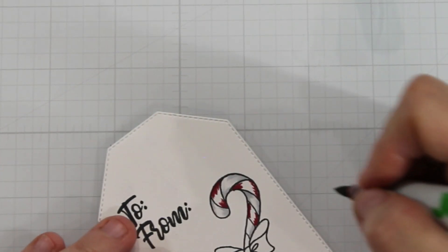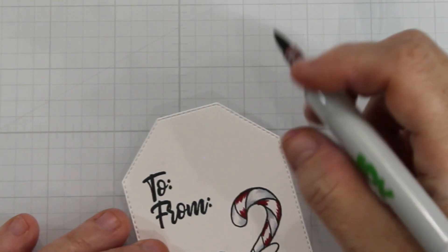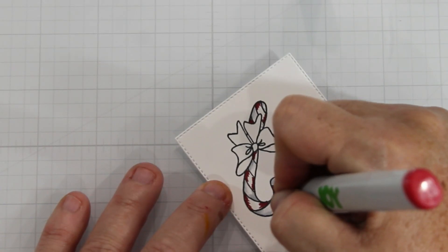If you tend to be heavy-handed or just aren't comfortable with your Copics yet or any alcohol marker you can always go back in with a white gel pen.